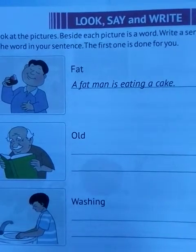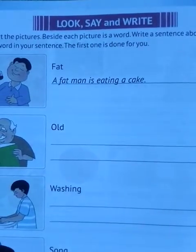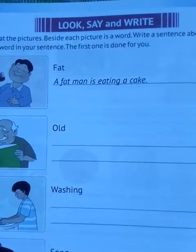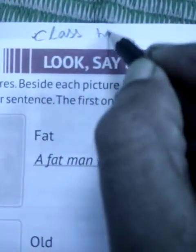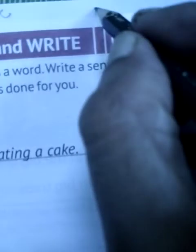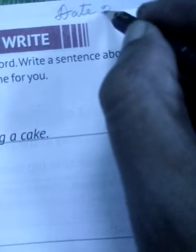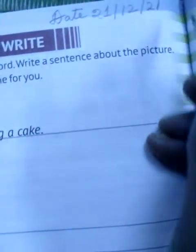Good morning dear students. Today in English class I am going to do page number 66. So all of you please open your English book and watch the video very properly with the help of your parents. So let's start. First of all you have to write class work. Then this corner, date. D-A-T-E, date. Today's date is 21, oblique month is 12, oblique 2021 is the year.